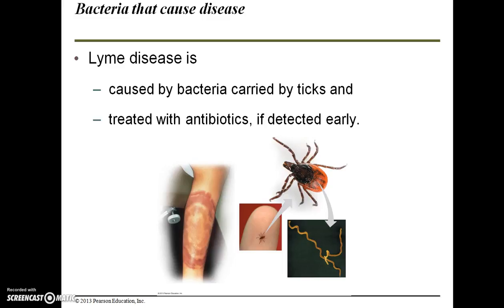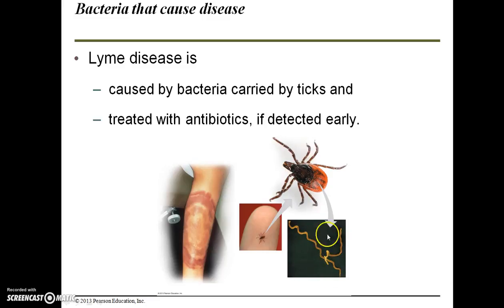Lyme disease is caused by bacteria carried by ticks and is treatable with antibiotics if detected early. It's increasing in incidence in certain states, particularly on the west coast, carried by deer ticks. One of the most common clinical signs is a bullseye rash that radiates out from where the tick bit you. However, this bullseye rash does not present in all cases of Lyme disease, so you can still have it without showing the rash, making it sometimes hard to diagnose.